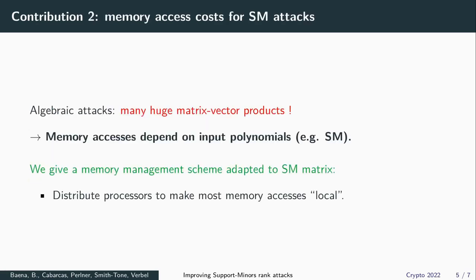A second contribution was analyzing the memory complexity of a support miners attack on min-rank. Memory usage can be a bottleneck for algebraic attacks because we deal with linear algebraic operations over very large matrices. We show that we can exploit the support miner structure to arrive at a more precise complexity estimation, by giving a memory management strategy adapted to this structure in which most memory accesses may become local.